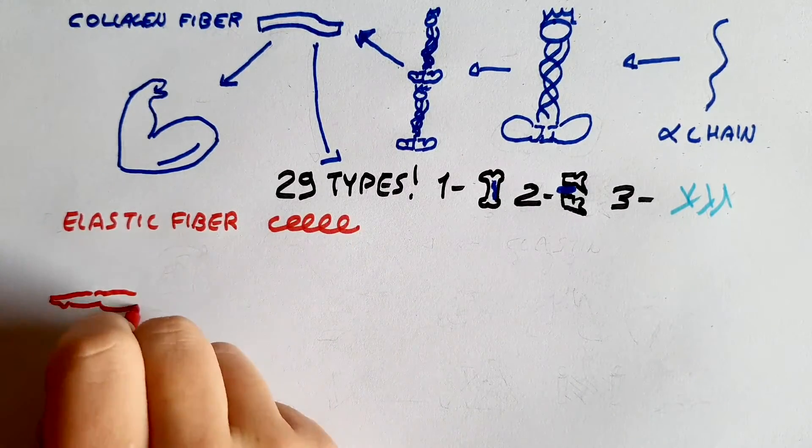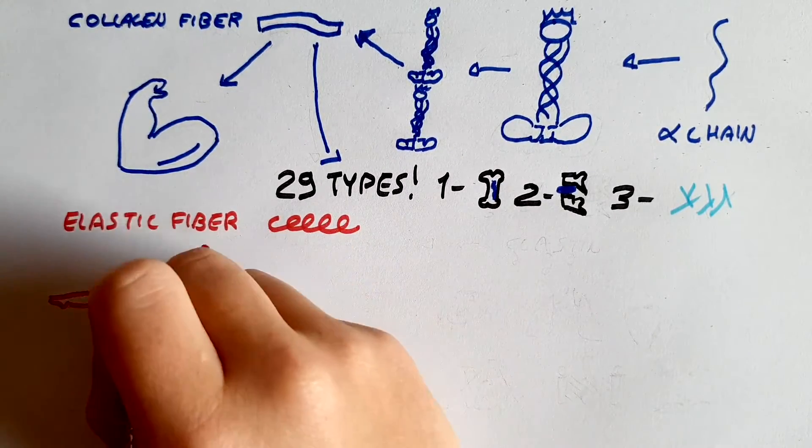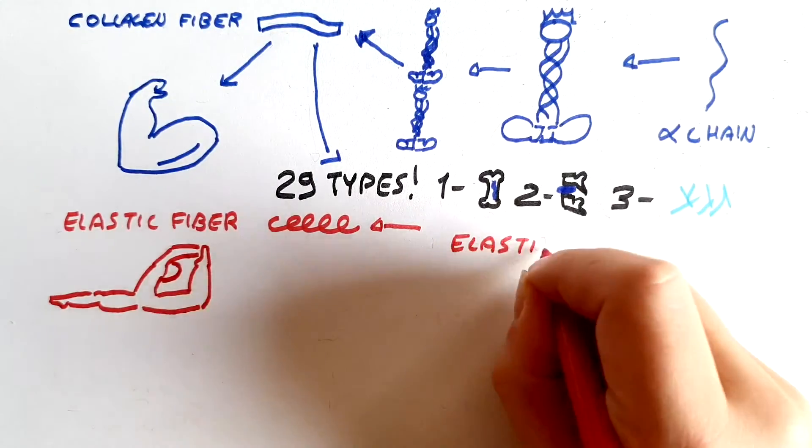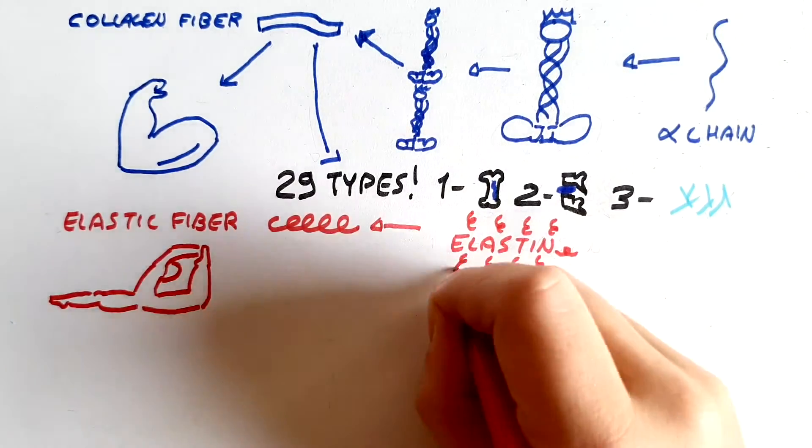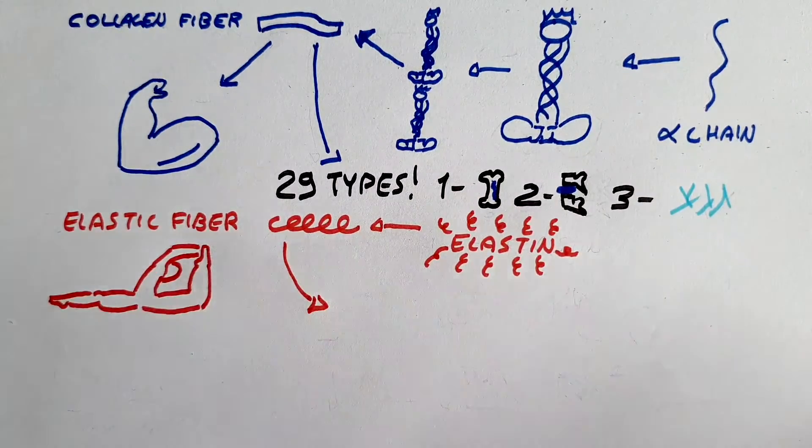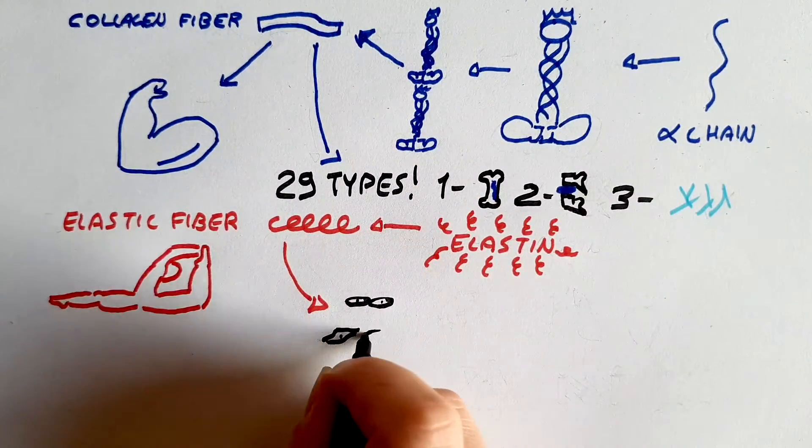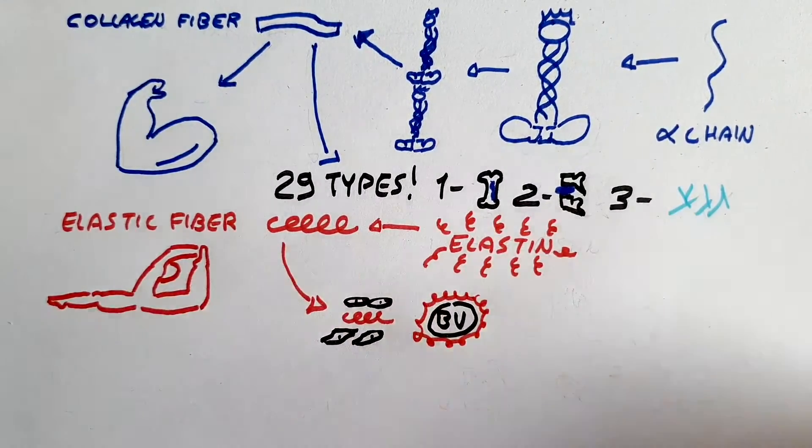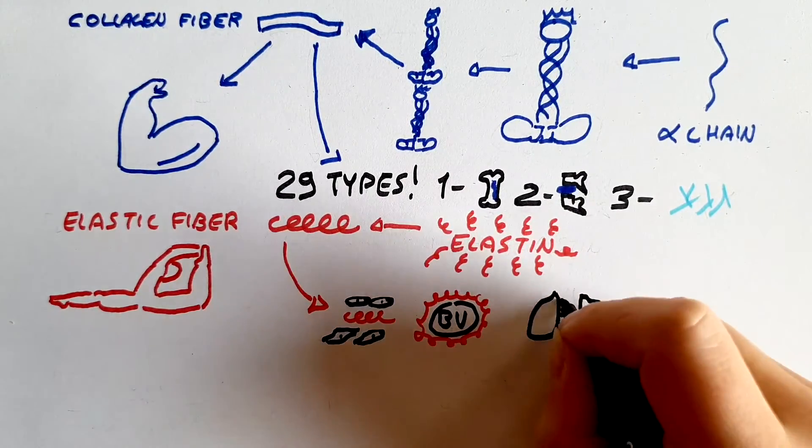Secondly, elastic fibers are necessary to balance the stiffness of collagen fibers. These proteins are thin and are characterized by a core of elastin surrounded by microfibrils and fibrils externally. They are abundant in skin, blood vessels, lungs, and bladder.